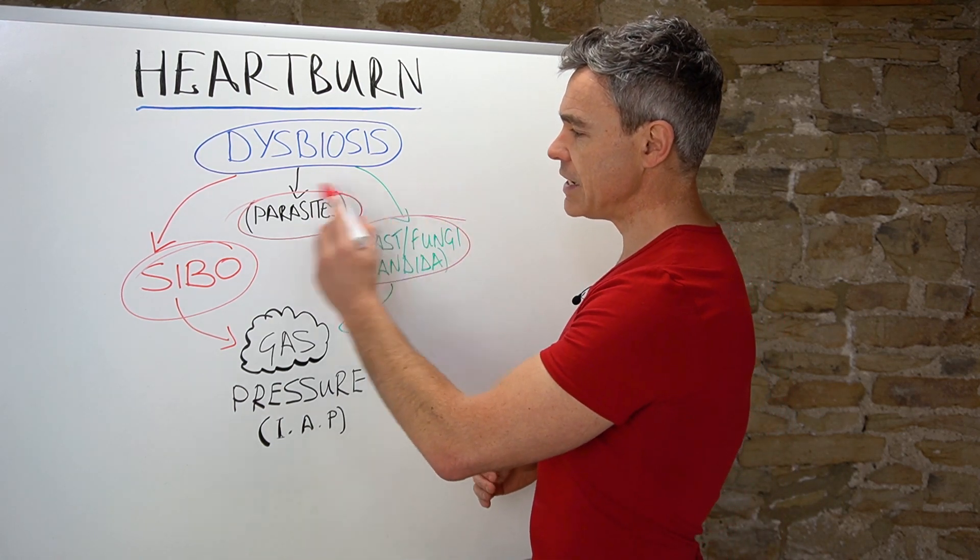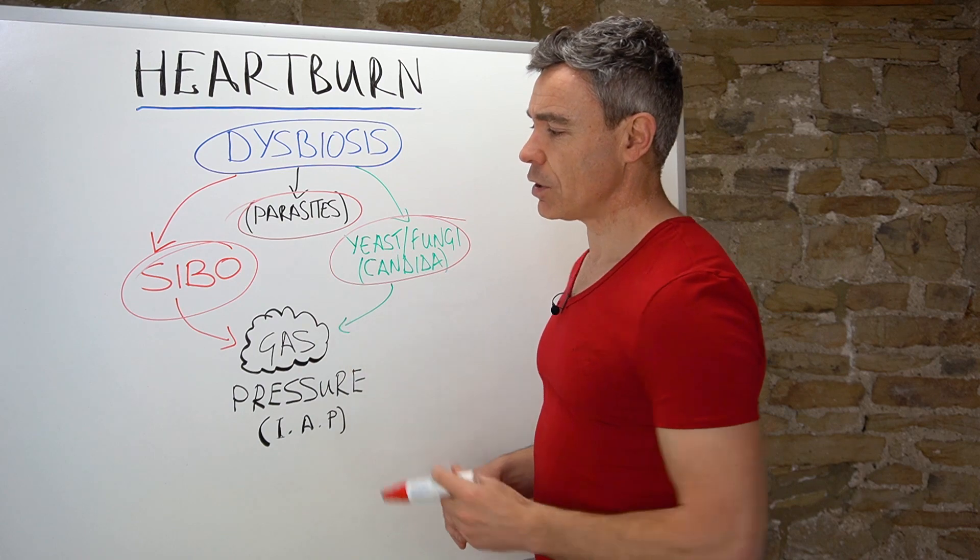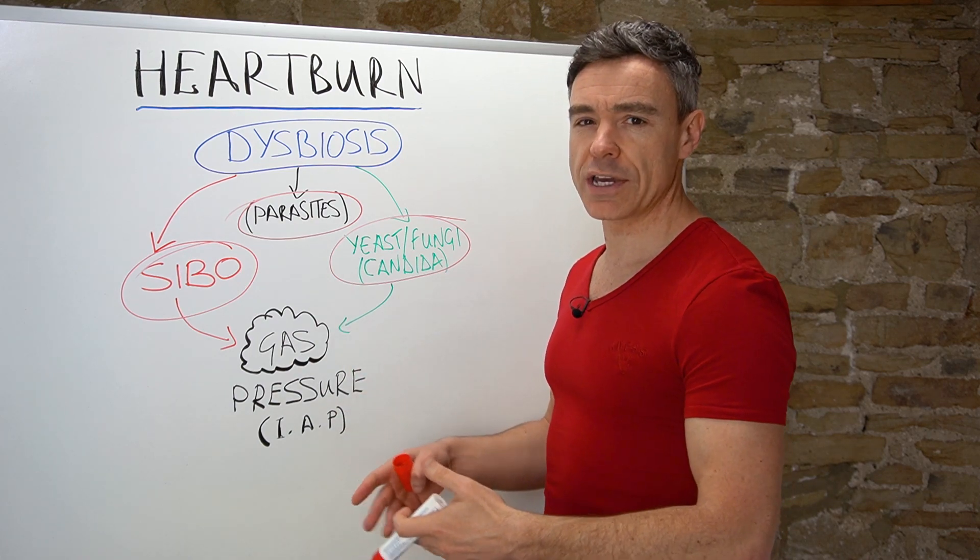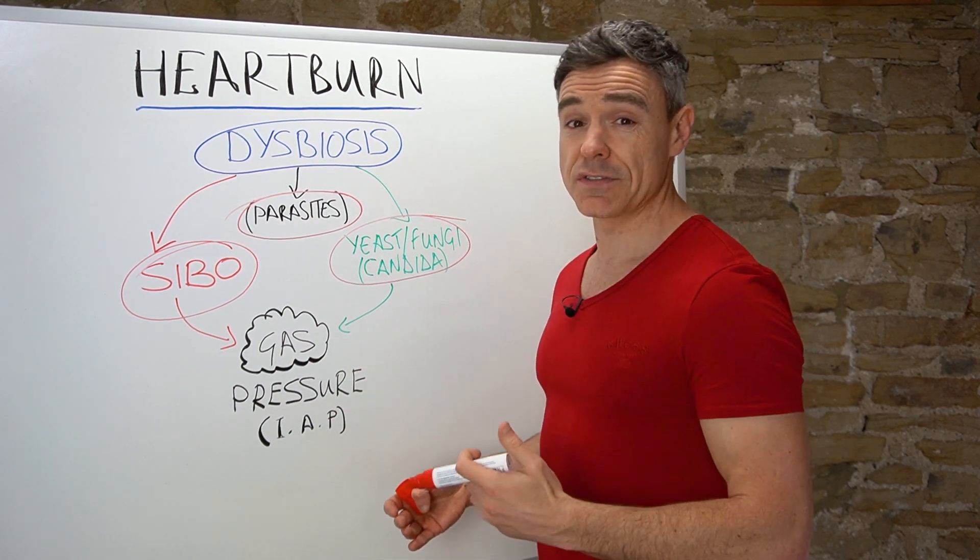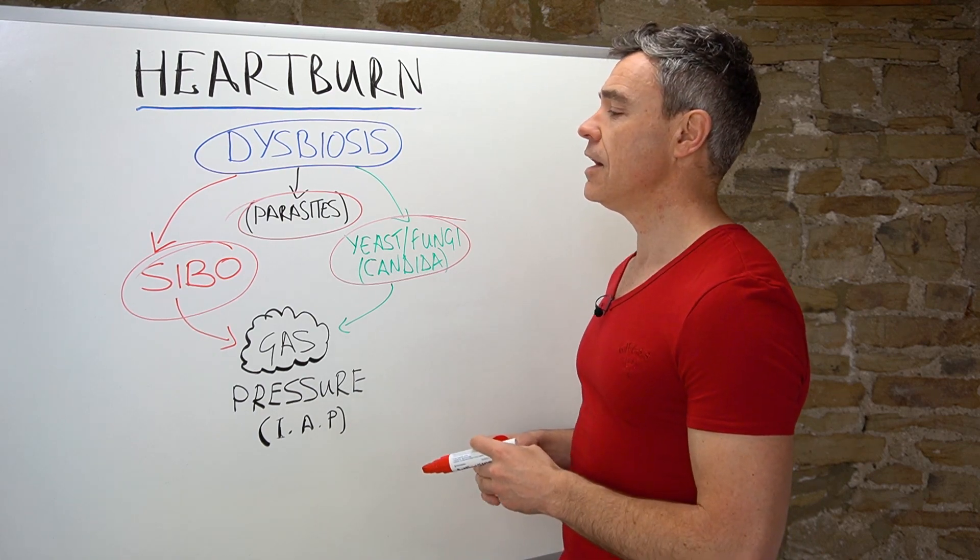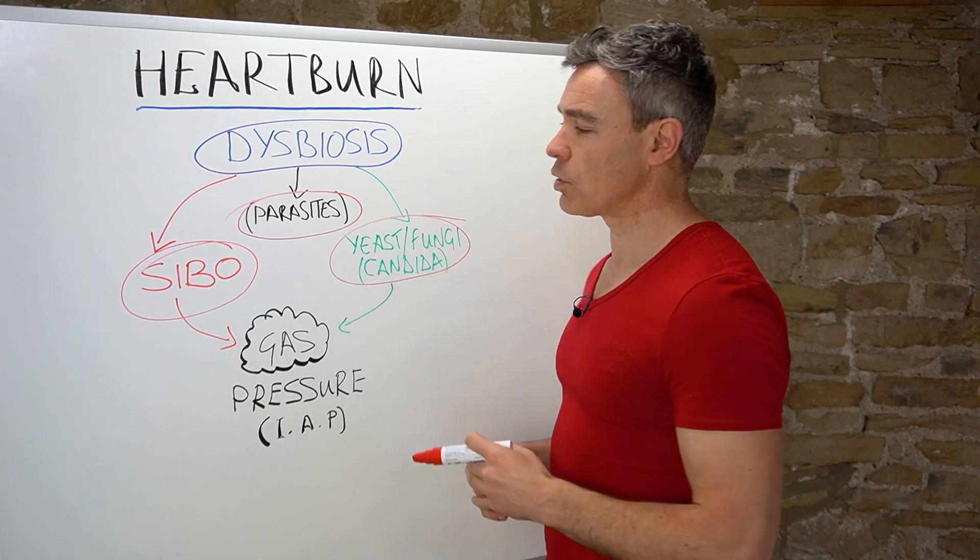And so these three different major groupings of bad bugs overgrowing or inhabiting the digestive system when they shouldn't really be there are the three main things that we want to worry about.